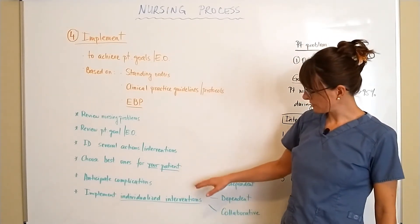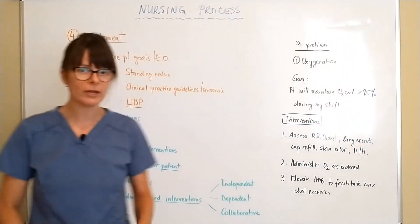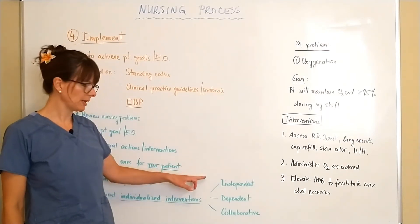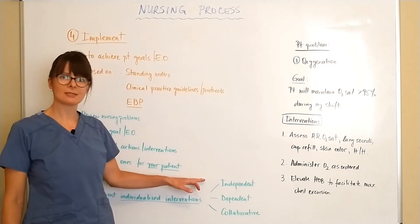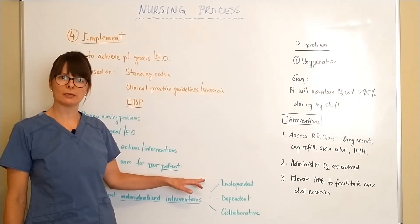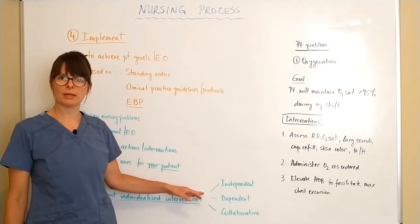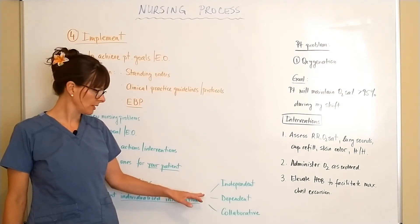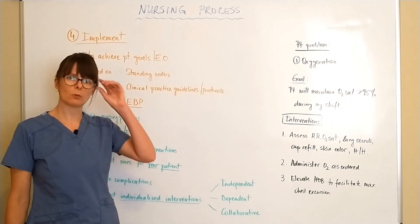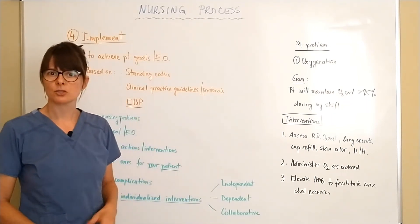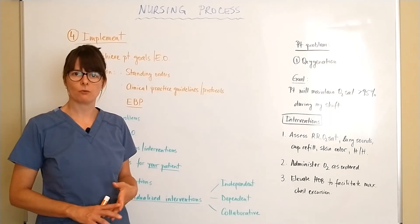Once we have established that, we can implement individualized interventions. Interventions always fall into three different categories: independent, dependent, or collaborative. Independent means interventions the nurse can take independently without any order. Dependent interventions always require an order from the provider or physician — medications, for example. Collaborative interventions involve working with different disciplines such as physical therapy, speech therapy, occupational therapy, and social work.